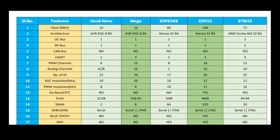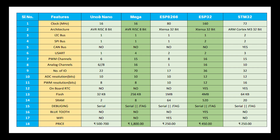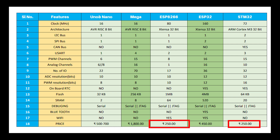For the price comparison: 6 to 8 months ago all boards came under 500 rupees except the Mega, but now Arduino board prices have gone up. Arduino Nano and Uno are between 500 to 700 rupees, and Mega is 1800 rupees. But you can get ESP8266 and STM32 for 250 rupees, and ESP32 for 450 rupees.